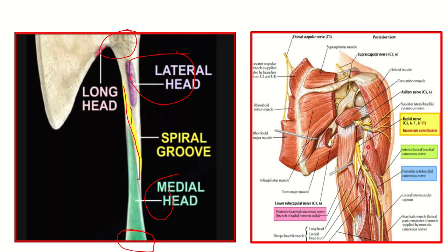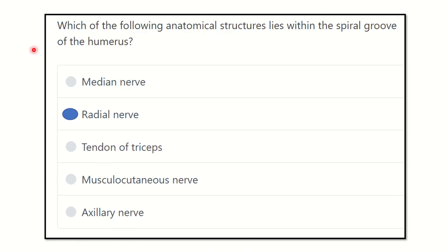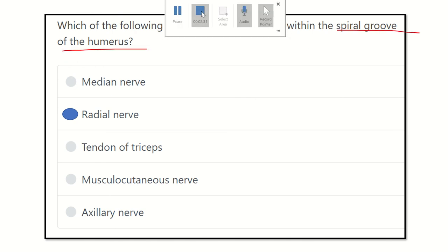One part of the triceps muscle is in the upper part and another head of the triceps is in the lower part, forming the spiral groove. Through the spiral groove a nerve is passing, and if we find the name — this is the radial nerve. So the radial nerve passes through the spiral groove of the shaft of the humerus. Our final answer is the radial nerve, as confirmed in the picture.